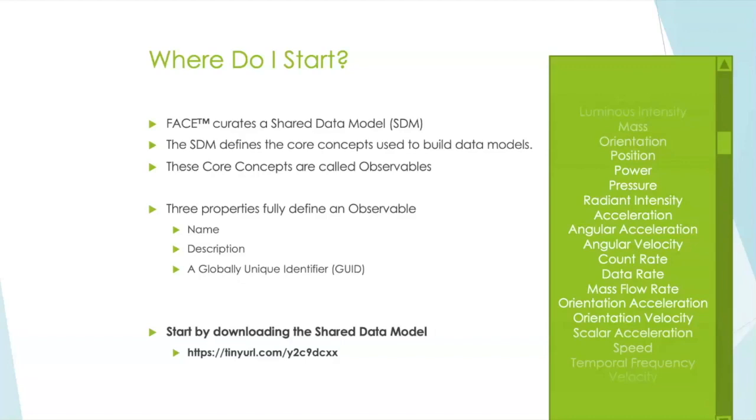Second, part of the definition of the observable is its description. We actually manage that description. The goal there is to help disambiguate what we mean by position or radiant intensity. It helps provide some better understanding for what that observable is intended to mean.